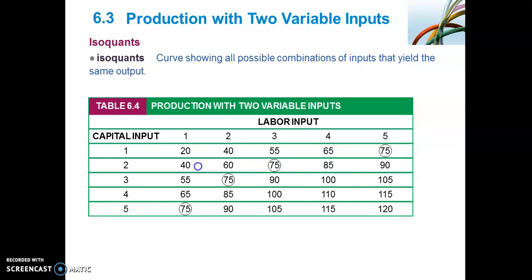If we keep capital fixed at two units and allow labour to vary, as we increase each unit of labour, output increases from 40 to 60 to 75 to 85 to 95. But notice what happens with each additional unit of labour: the change in output diminishes. It first increases by 20, then by 15, then by 10, and lastly by 5. This illustrates diminishing marginal returns to labour.